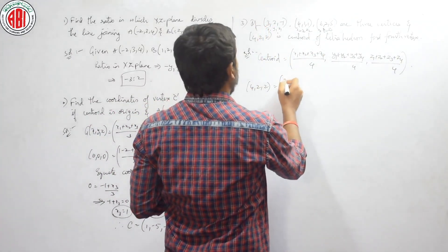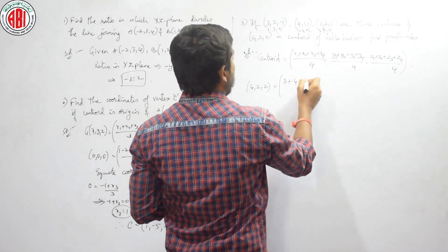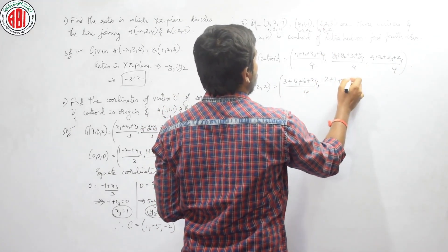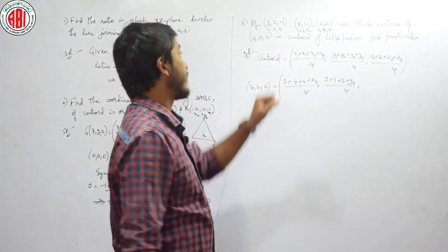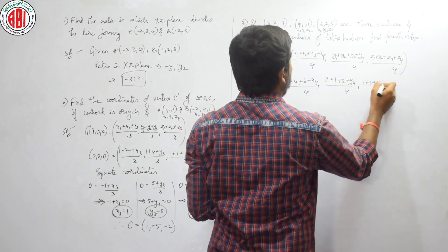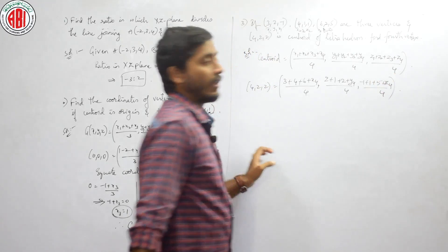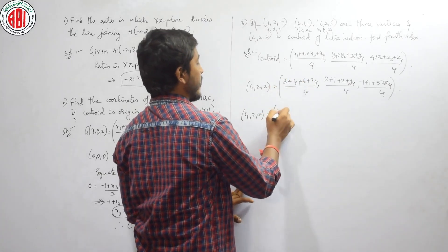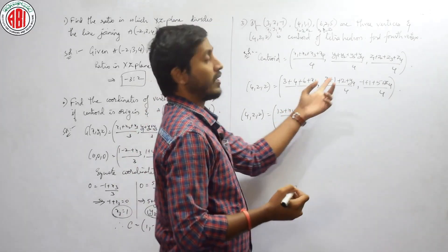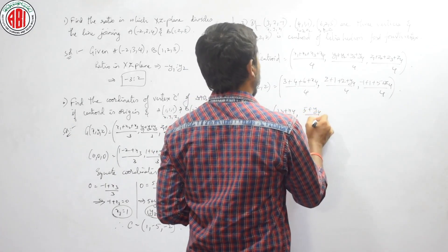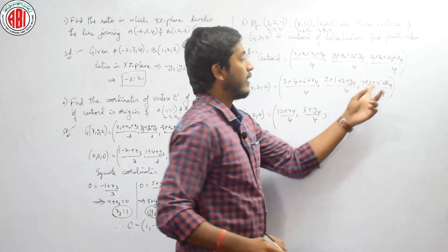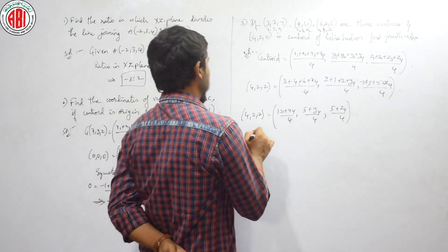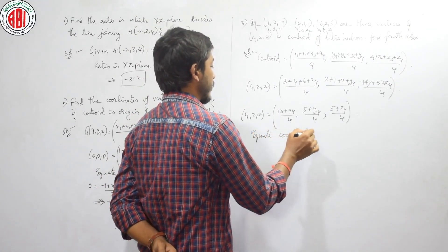Let us do that: (3 plus 4 plus 6 plus X4) whole divided by 4, next (2 plus 1 plus 2 plus Y4) whole divided by 4, and Z: (minus 1 plus 1 plus 5 plus Z4) whole divided by 4. Let us simplify: 4 comma 2 comma 2 is equal to (3 plus 4 plus 6) is 13, so (13 plus X4) divided by 4. Here (2 plus 1 plus 2) is 5, so (5 plus Y4) divided by 4. Minus 1 plus 1 get cancelled, leaving 5, so (5 plus Z4) divided by 4.